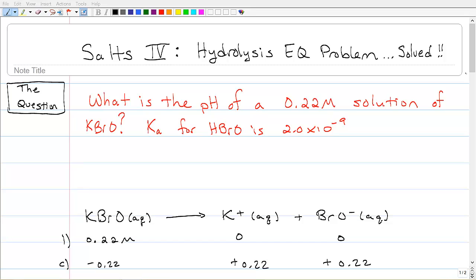So one of the things that should clue you on to the idea that this is a hydrolysis problem is that you're given a Ka for a substance, HBrO, that is not in the solution. Take a look. KBrO is in the solution, not HBrO. And there's a huge difference between the two. One of them is an acid, the HBrO, and the other one is a base, the KBrO.